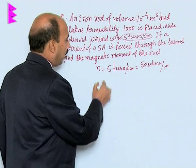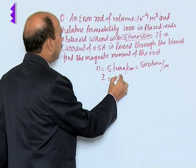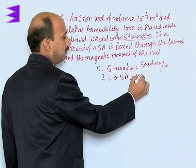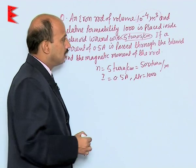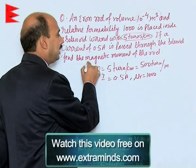Now, I is given to you 0.5 ampere and mu r is given to us 1000. We have to get magnetic dipole moment.